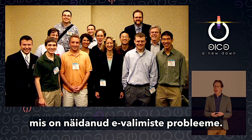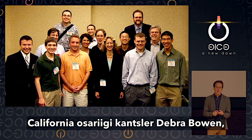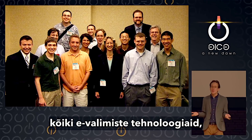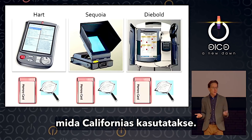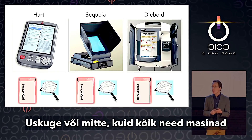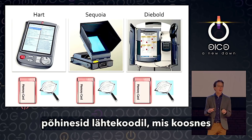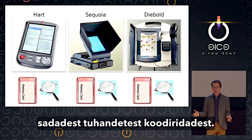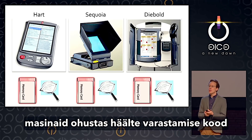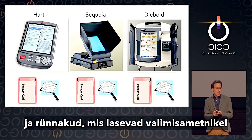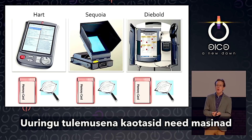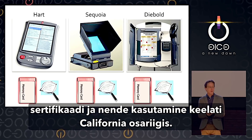This isn't the only study that's shown problems in e-voting. I was part of a study commissioned by California Secretary of State Deborah Bowen in 2007 that reviewed every electronic voting technology in use in California. We studied machines from three manufacturers — Hart, Sequoia, and Diebold — each based on source code in the hundreds of thousands of lines, too complicated to possibly be secure. All of these machines were susceptible to vote-stealing code and to attacks that let election officials violate the secret ballot. As a result, all of these machines were decertified and banned from use in California.